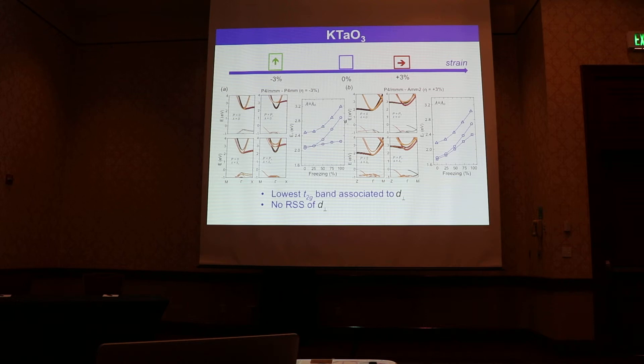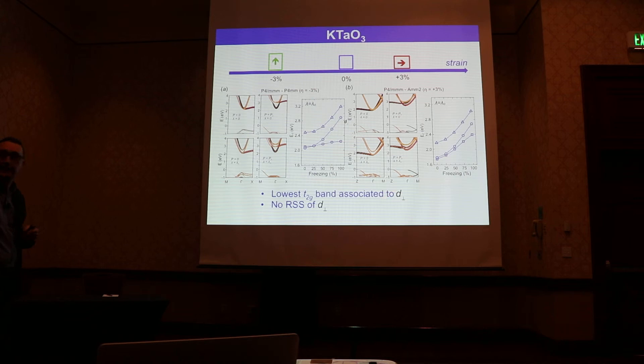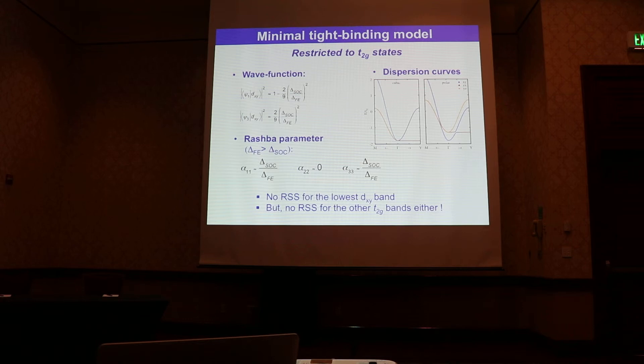We performed the same calculation for a real perovskite, taking potassium tantalate (KTaO3) as an example. KTaO3 is an incipient ferroelectric that can be made ferroelectric under strain. Whether made tetragonal or Amm2 under compressive or tensile strain, we get exactly the same result: the lower T2G band is associated with the D orbital perpendicular to the polarization and shows no Rashba spin splitting.